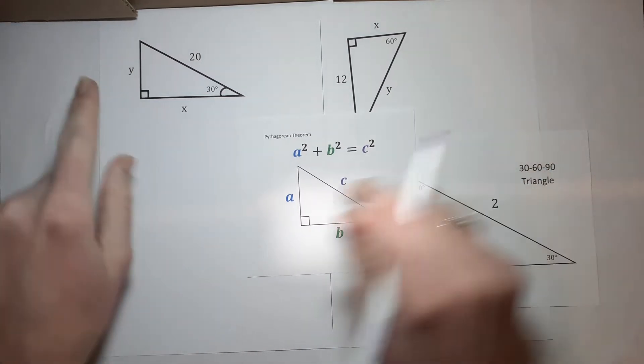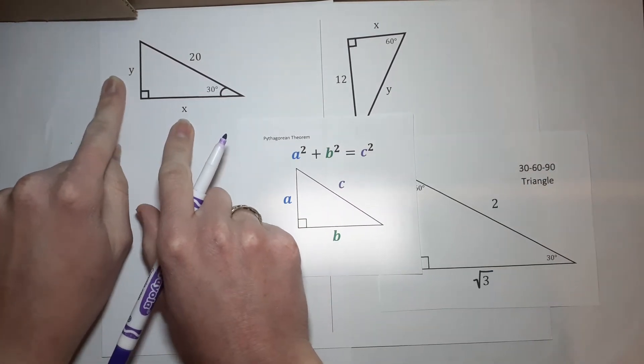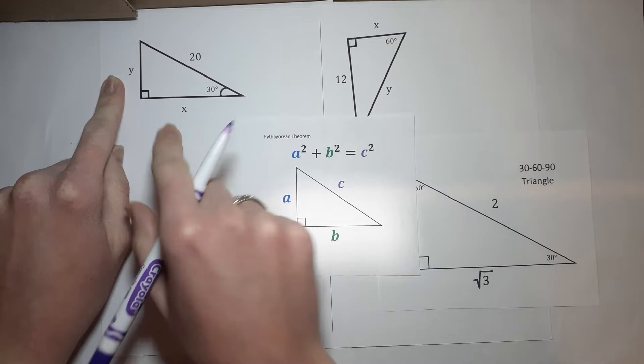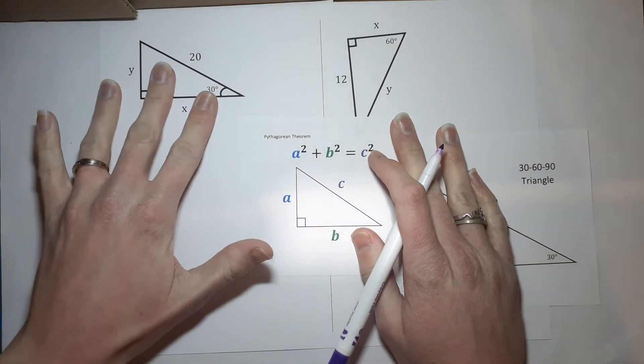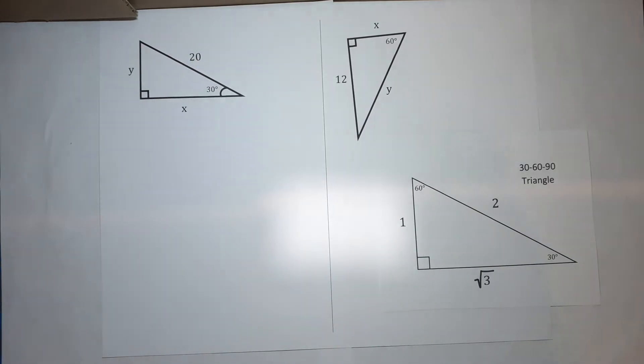The reason is, look at this guy. We have two unknowns. So, the Pythagorean Theorem, don't tell it, but it's not very helpful in this situation. That's why we need to know this.